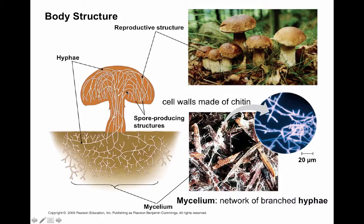The fungus's reproductive structure in this case is a mushroom, and spores are produced underneath in the gills. Other types of fungi have different reproductive structures that also produce spores.